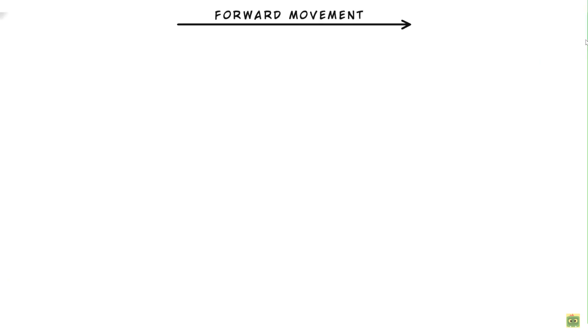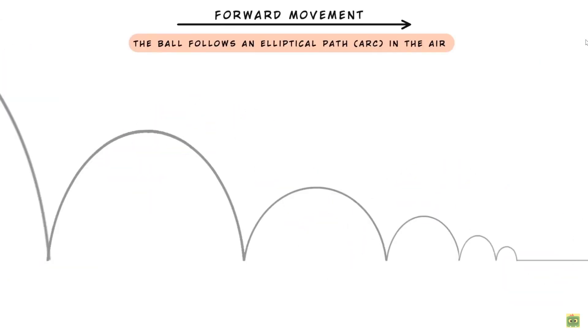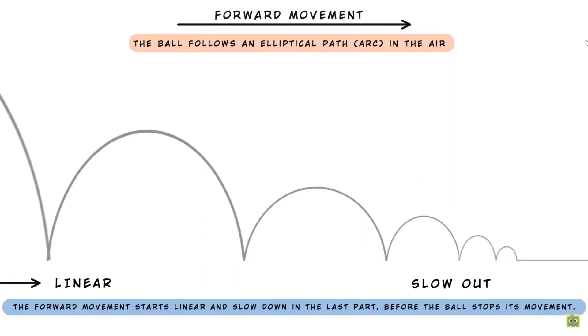When the ball bounces moving forward, it follows an elliptical path in the air — an arc — that gives the bounces a natural feeling. The forward movement starts linear and slows down in the last part, before the ball stops its movement.